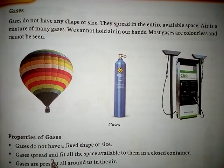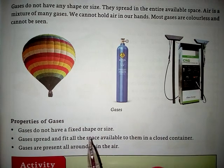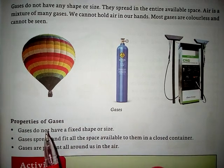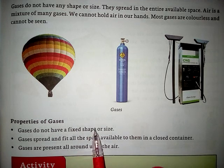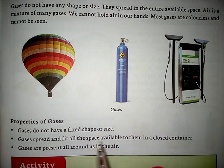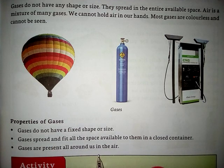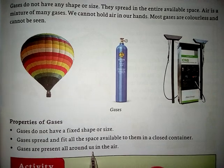Properties of gases: Gases do not have a fixed shape or size. Gases ka koi bhi fixed shape or size nahi hota. Gases spread and fit all the space available to them in a closed container. Unke aas paas gases jahan bhi hoti hain, unhe jahan jagah milti hai, woh wahan enter kar jaati hain aur phail jaati hain. Gases are present all around us in the air — gases hamare chaaron taraf vaatavaran mein present hain.